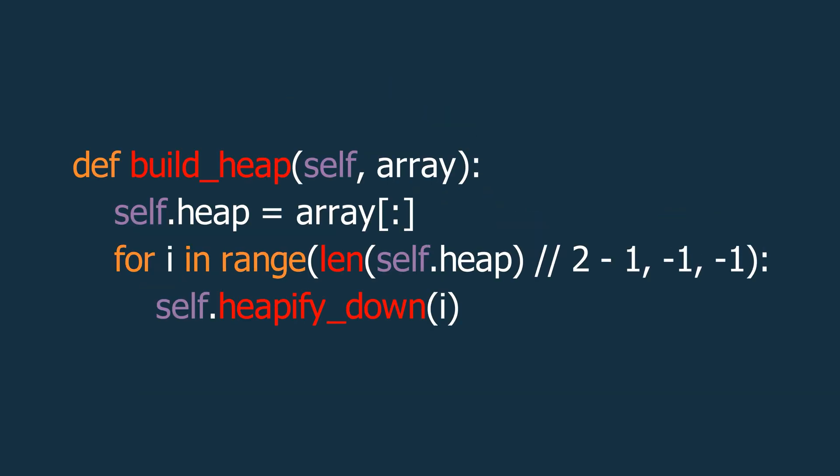Now, let's look at the code for building a heap from an array. We'll start by creating a function called build_heap, which takes an array as its input. Inside this function, we'll set our heap to be this input array. Then, we'll run a loop starting from the last non-leaf node, and move all the way up to the root node in reverse order. For each node in this range, we'll perform the heapify down operation.